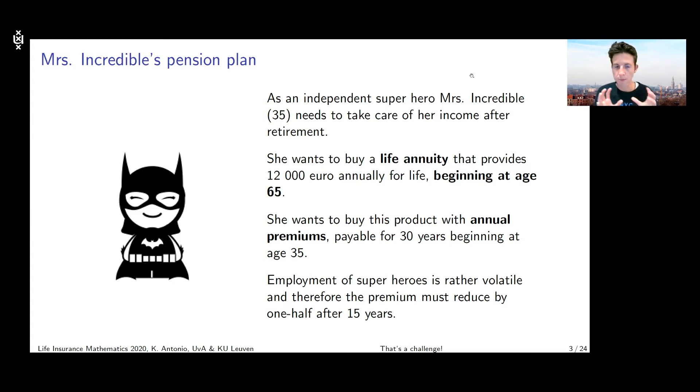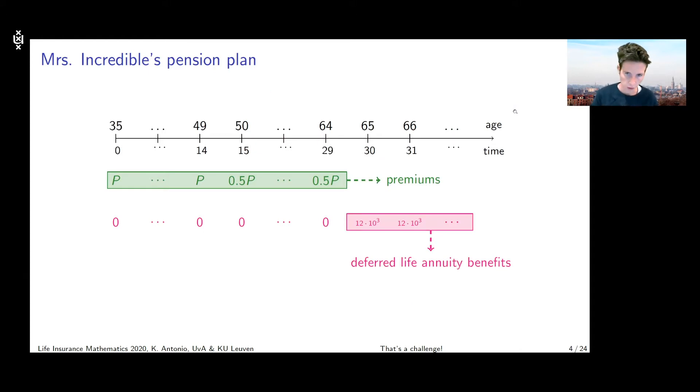And now there's one thing that is a little bit peculiar here. Mrs. Incredible wants the premium to reduce by one half after 15 years. So we need to think about what is the cash flow that represents the premium payments in this exercise, what is the cash flow that represents the annuity benefits, and we're going to establish an equivalence between the EPVs of both cash flows in order to determine the premium on this life annuity product.